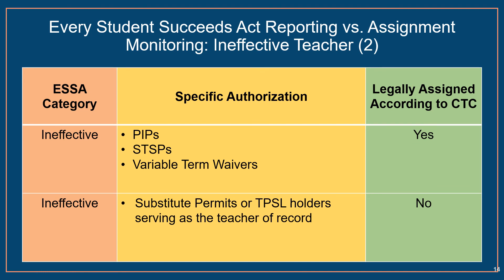We also see a discrepancy between what is viewed as a legal assignment by the CTC and what is considered ineffective under California's ESSA definitions. Teachers with a PIP, STIP, or variable term waiver are legally assigned according to the commission certification because they hold documentation of a permit. However, we see alignment between CTC's determination and California's ESSA definitions when it comes to substitute permits or TIPSLs as being not legally assigned as the teacher of record and falling under the ineffective category.